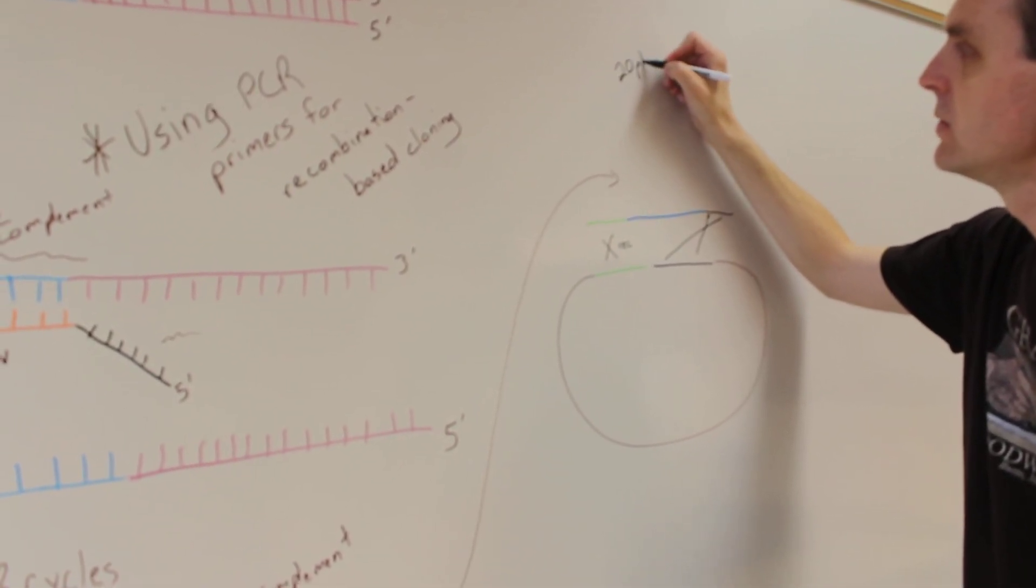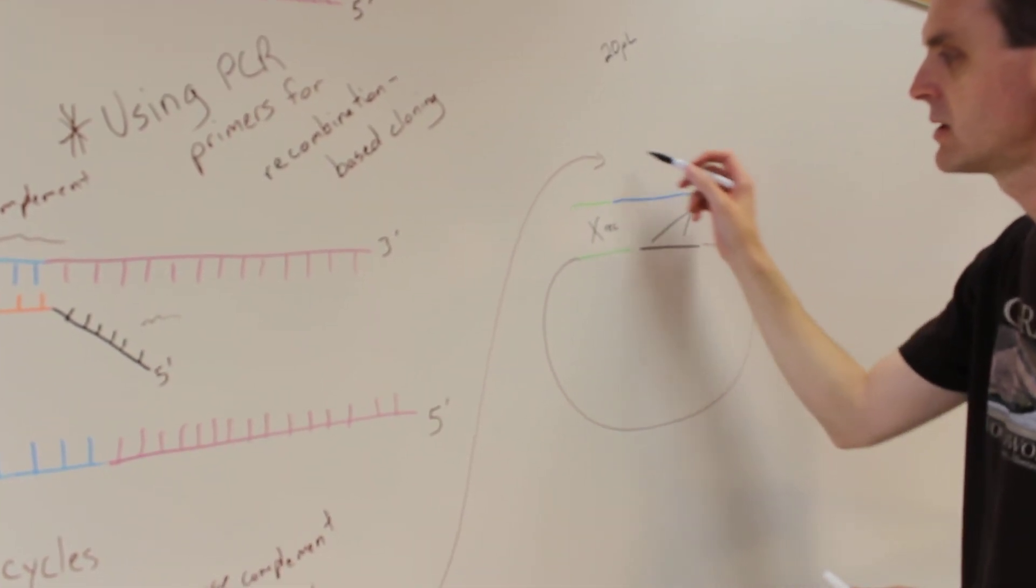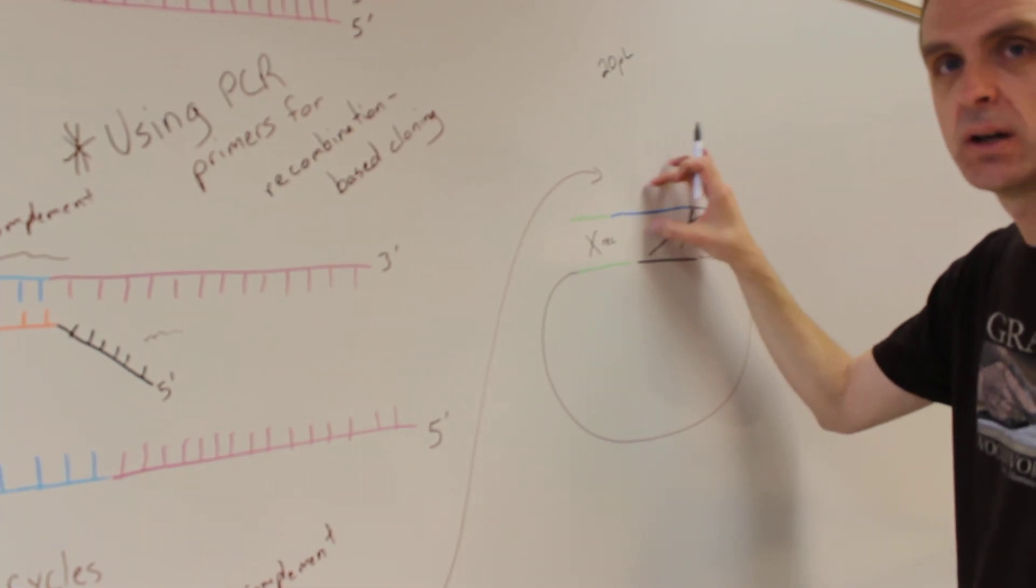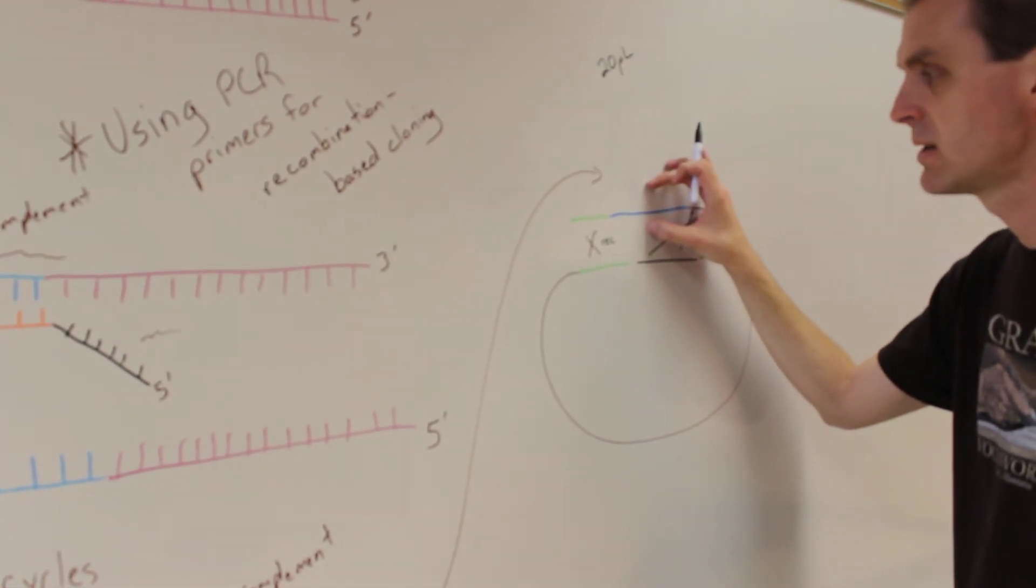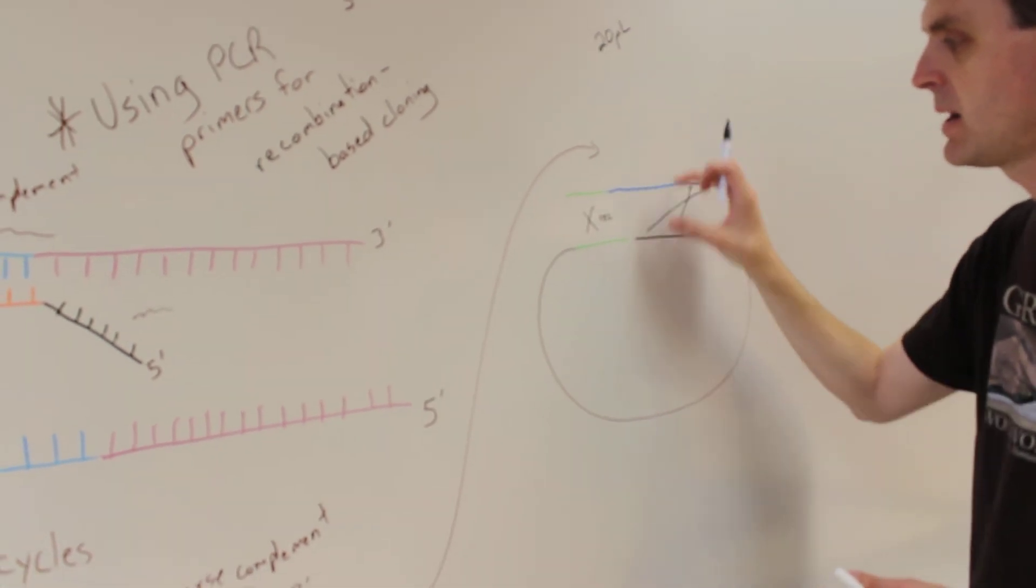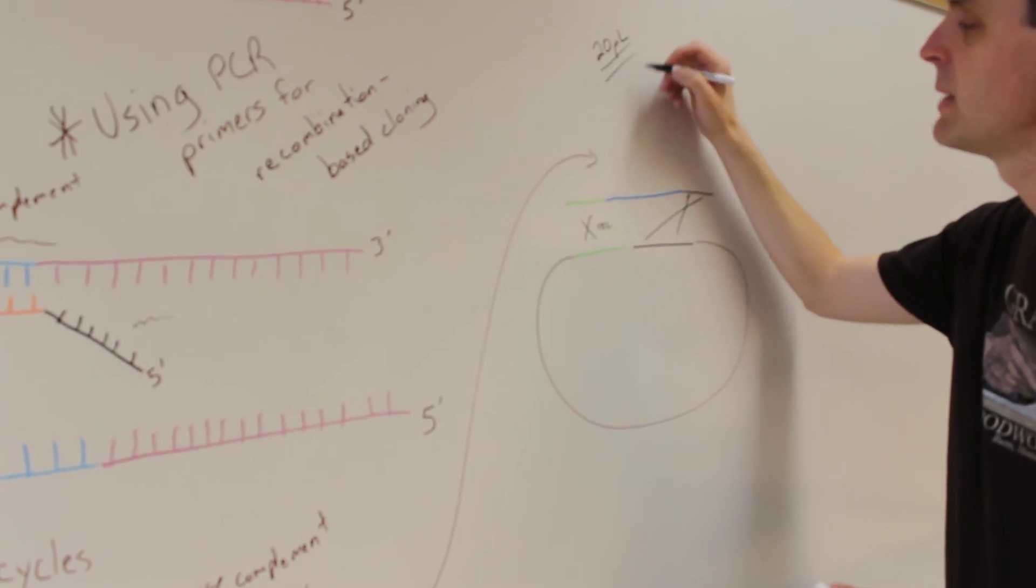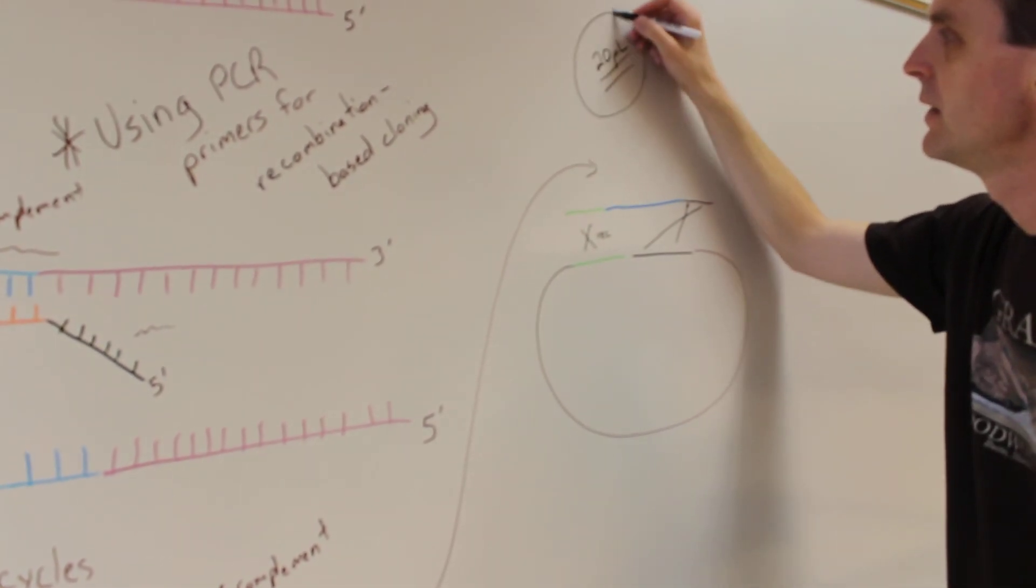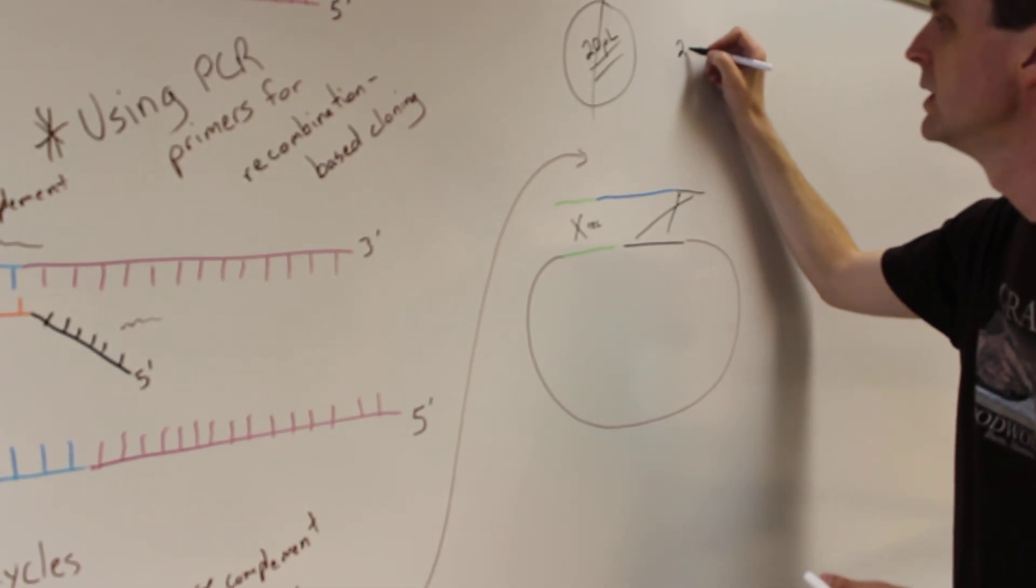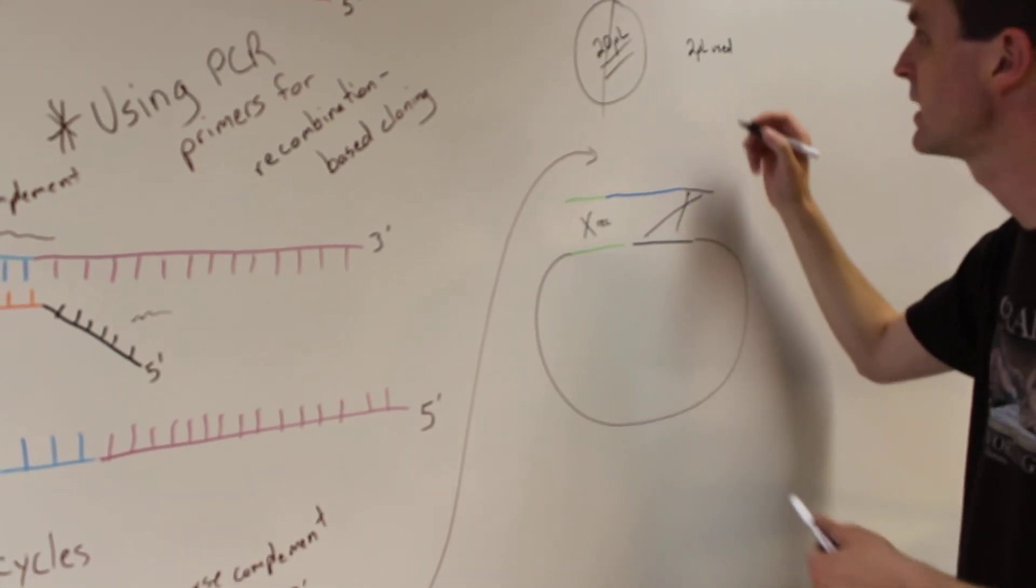The kit that we use says to set up a 20 microliter reaction, where you mix a certain amount of your PCR product that's going to be cloned into the plasmid, and you mix the PCR product, the plasmid, and some enzymes together. They say 20 microliters, and I do not want anyone to be doing that, because you end up only using 2 microliters to transform into bacteria.